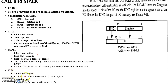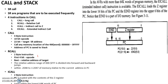ICALL is a 2-byte instruction. The program counter is loaded with the content of the Z register. The Z register is a 16-bit register, so the call occurs within the lowest 64 kilobytes of the program memory.